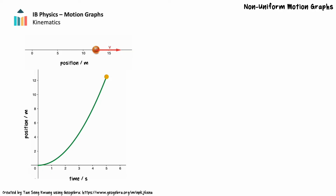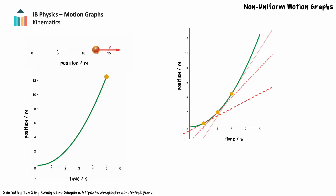However, we're still able to determine the object's velocity from the graph. When an object has non-uniform motion, we can determine its instantaneous and average velocity from a position time graph. Instantaneous velocity refers to the velocity of an object at a specific instant or moment in time — it represents the object's velocity at an infinitesimally small time interval. Graphically, this means that if we draw a tangent line to the graph at a given time, the gradient of the tangent line is the instantaneous velocity at that time. We can see for the basketball that the instantaneous velocity increases from 1 m/s at 1 second to 2 m/s at 2 seconds to 3 m/s at 3 seconds.